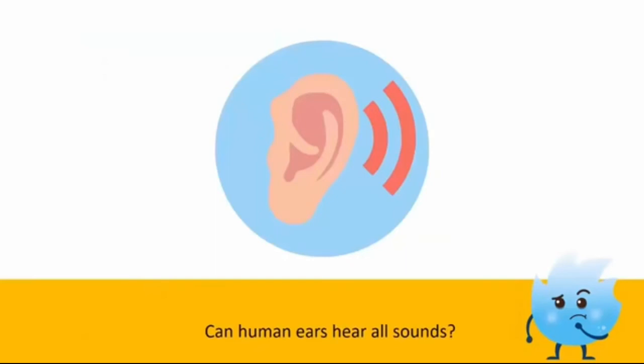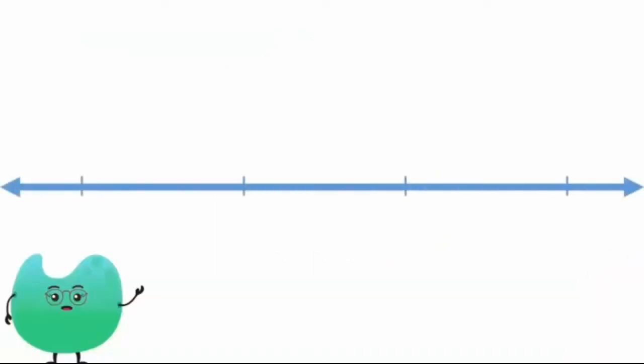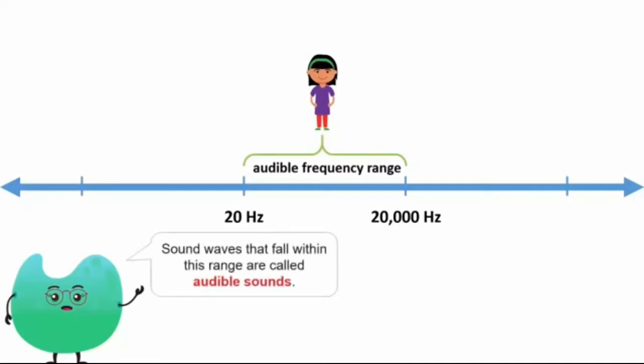Can human ears hear all sounds? An average human can hear a sound only if its frequency lies between 20 hertz and 20,000 hertz. These frequencies are called audible frequencies and the sound waves that fall within this range are called audible sounds.